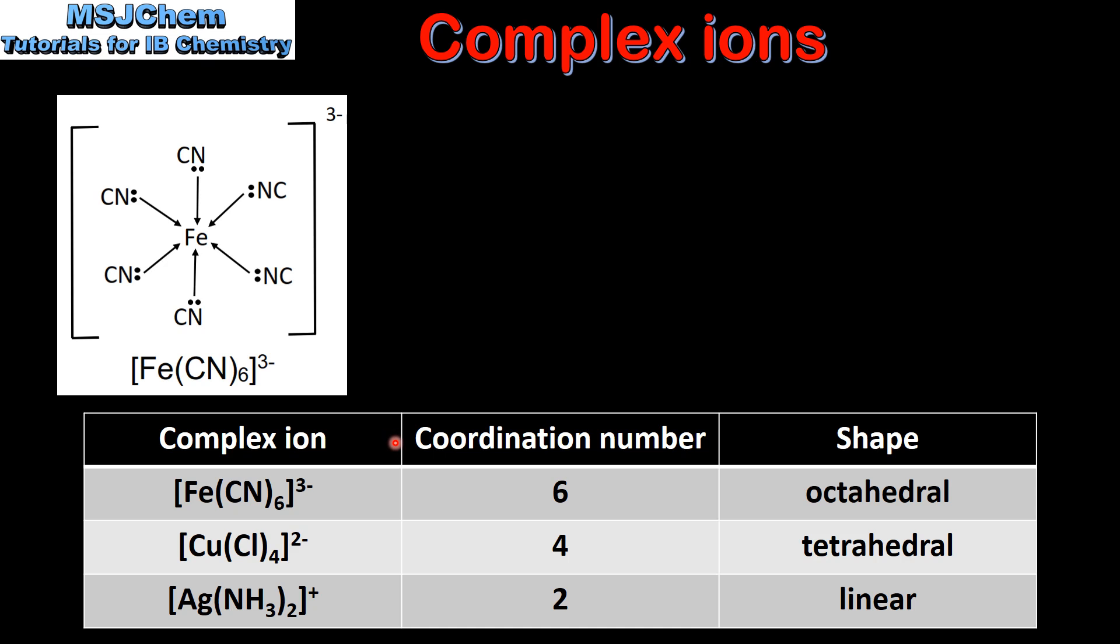The coordination number is the number of coordinate covalent bonds between the ligands and the central metal ion. Our first example has a coordination number of 6, which means it has 6 ligands bonded to the central metal ion, and the shape is octahedral.